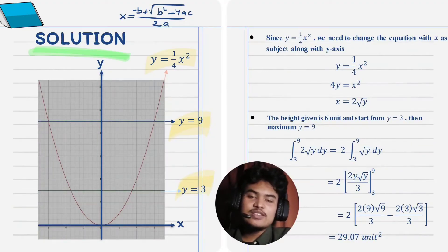Assalamualaikum, my name is Richard. Today I am going to present our solution for the problem. First of all, we need to create a graph for the equation given, which is y equal to 1/4 x squared. Then, we need to change the equation with x as a subject because the flower pot is rotating along with the y axis. Then, we can get x equal to 2 square root of y.